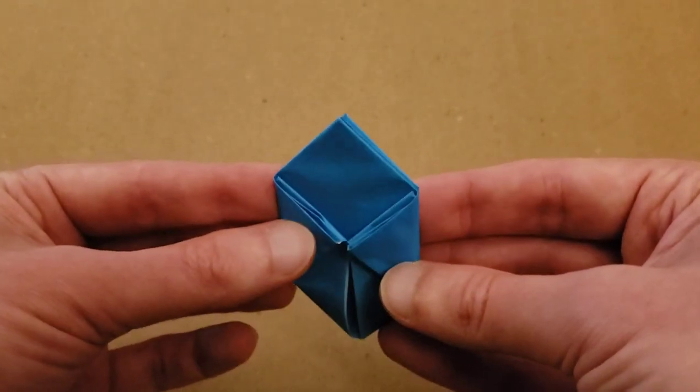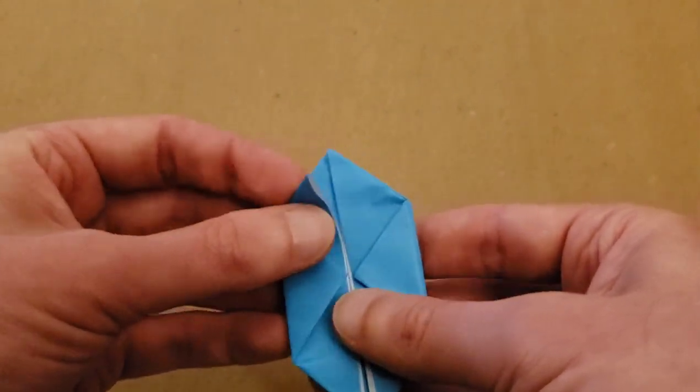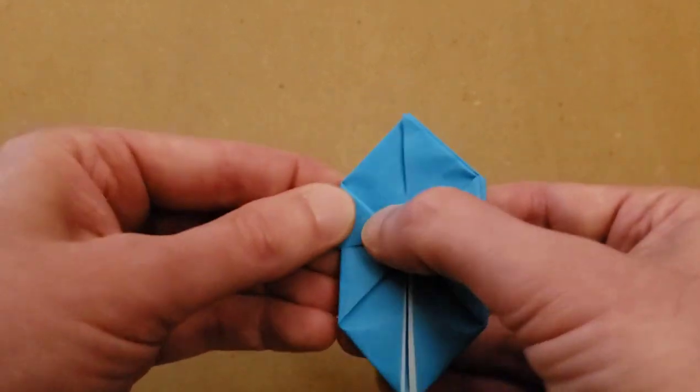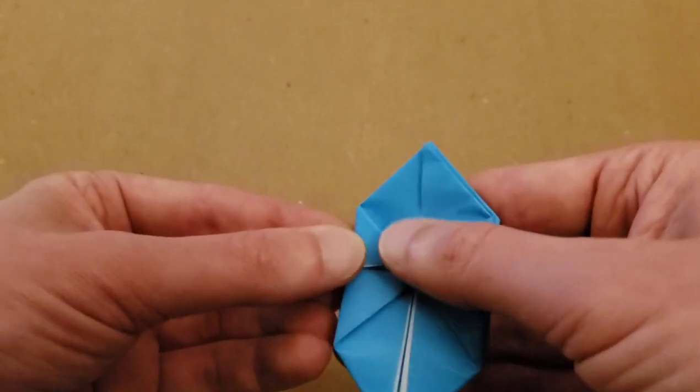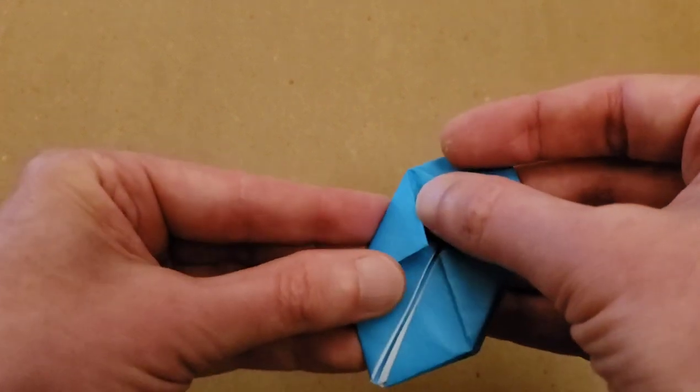And then we do the same thing on the other side. Turn it over, fold your flaps down, fold your flaps down, and in half. Lift it up, open the pocket.